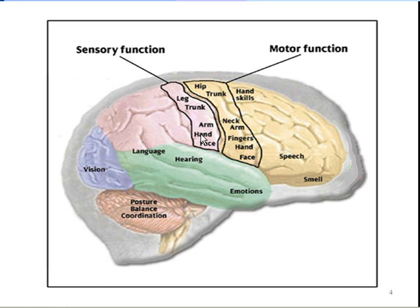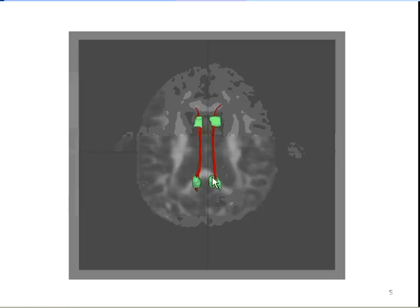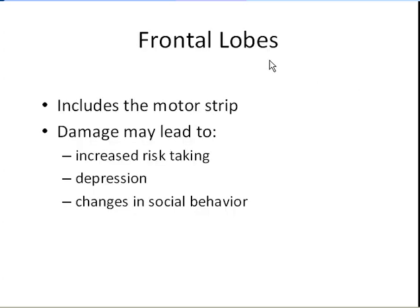Here we see an expanded view of the sensory motor cortex. Training in these areas often results in improved handwriting. Here we see the cingulate gyri. This dual structure helps us to be flexible. Problems with this structure lead to difficulties with flexibility, such as worrying and obsessions, or children having temper tantrums when asked to stop what they're doing and perform a different task. The frontal lobes include the motor strip. Damage to them can lead to increased risk-taking, depression, and changes in social behavior.